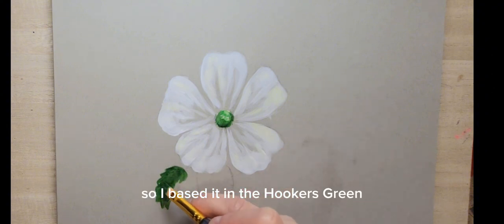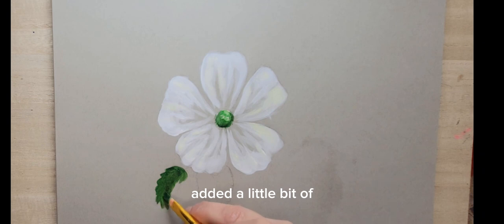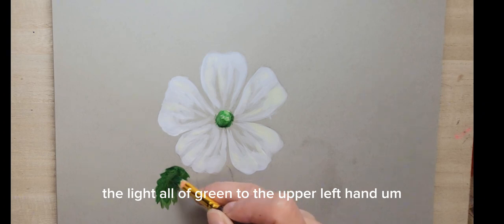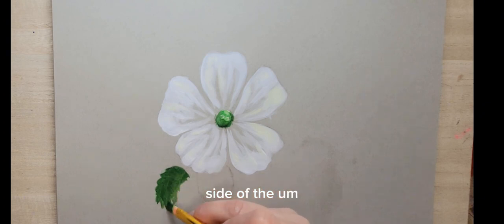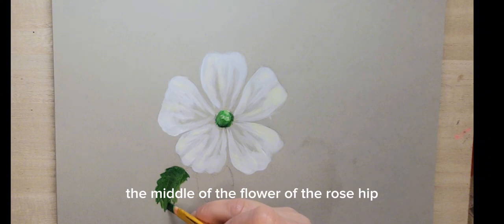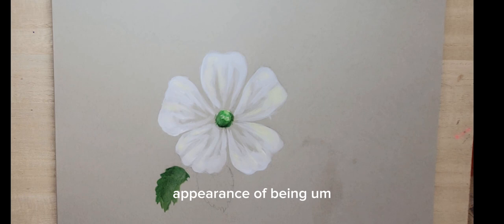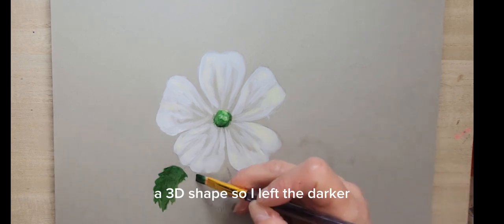I based it in the hooker's green and added a little bit of the light olive green to the upper left-hand side of the middle of the flower, of the rose hip. I wanted that to have the appearance of being a 3D shape, so I left the darker middle portion of the rose hip showing.